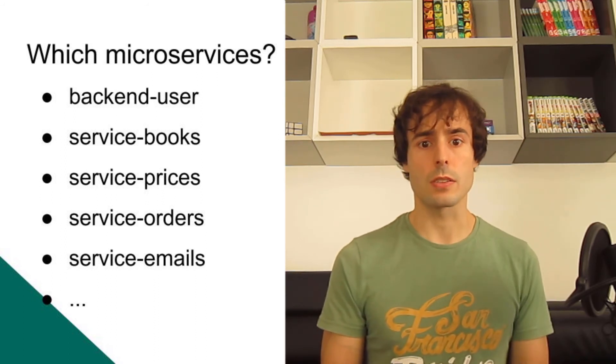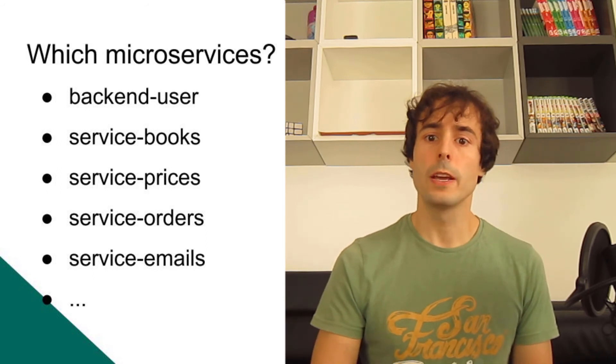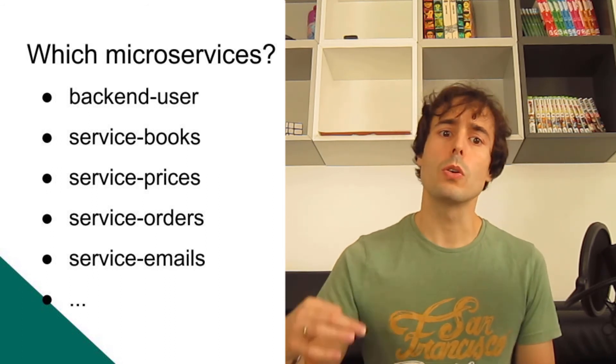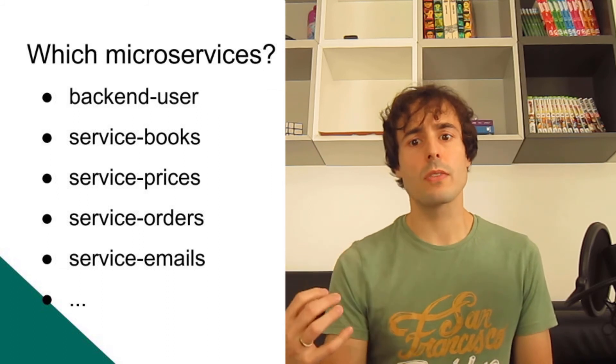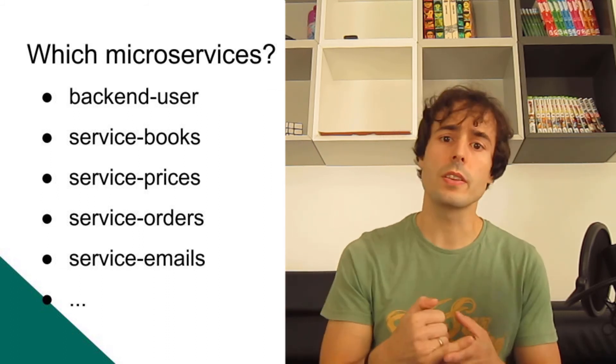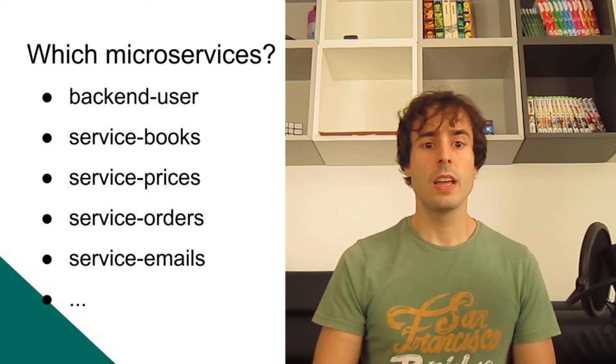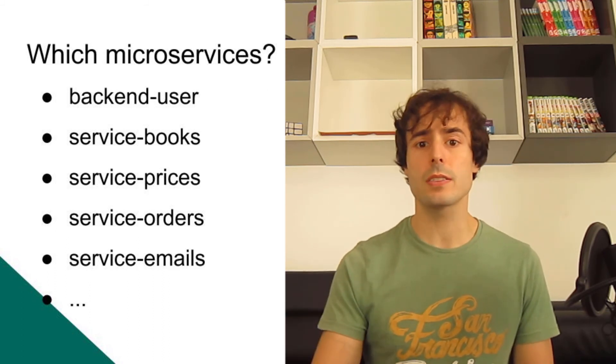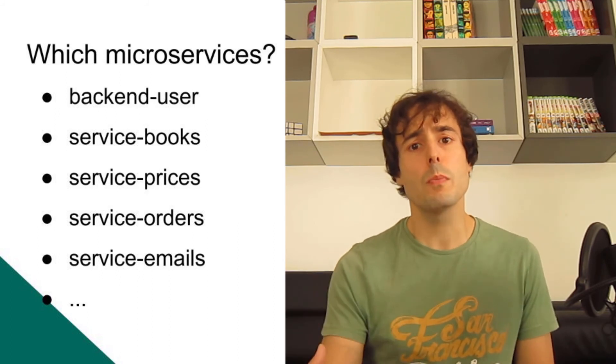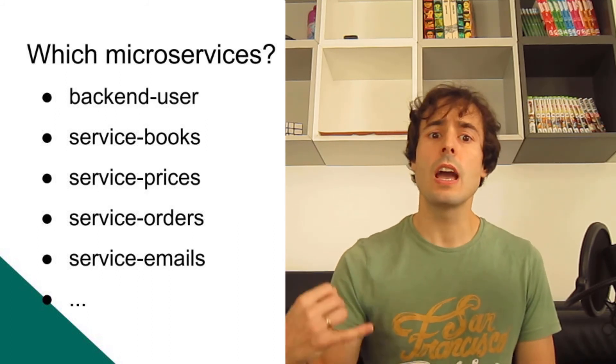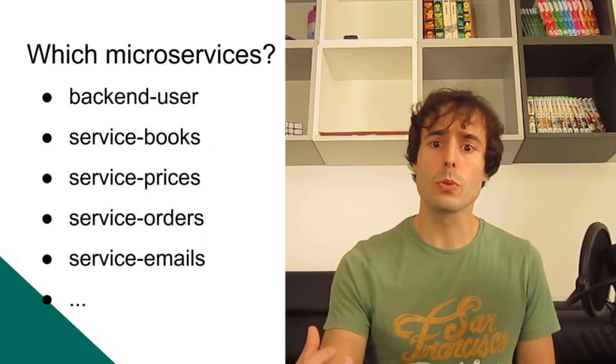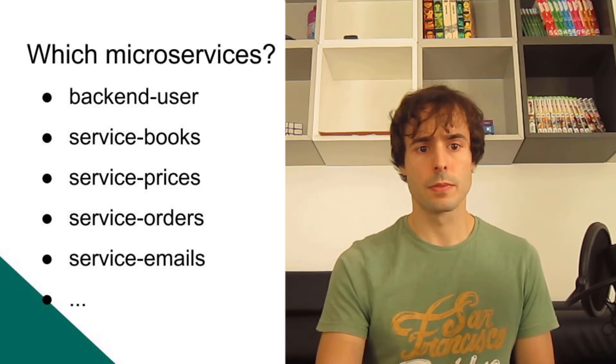Then, the internal microservices, the private microservices. To access those microservices, I must go through the backend because they are in a private network, unreachable from the outside. For the books information, for the prices, for the orders, emails, and more. Every time a new functional need appears, I can add and deploy a new microservice. I don't need to allocate a new server. Kubernetes will distribute the resources to manage a new service.